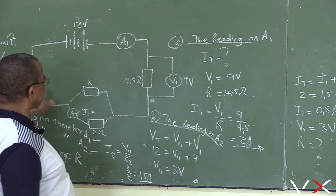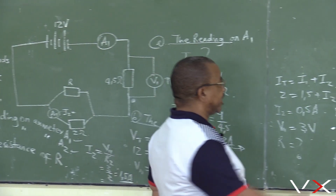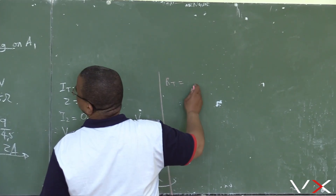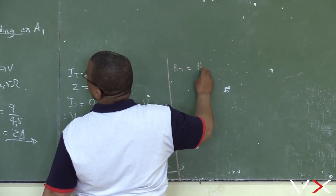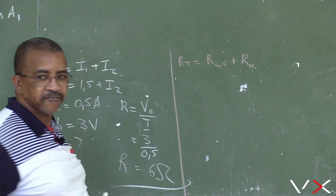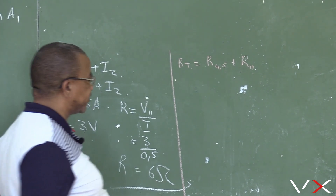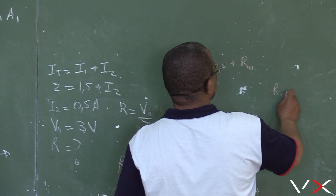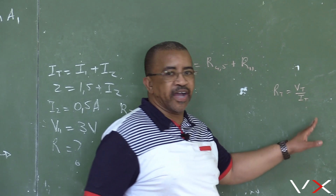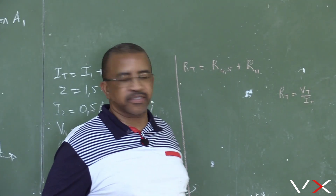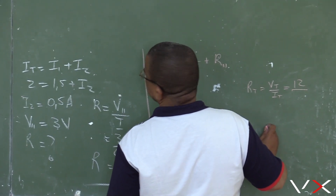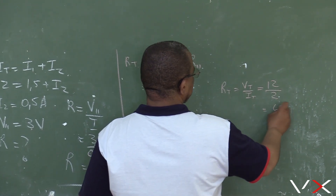What is the total resistance of the circuit? R total equals R 4.5 plus R parallel. R total equals V total over I total, which is 12 over 2, giving 6 ohms.